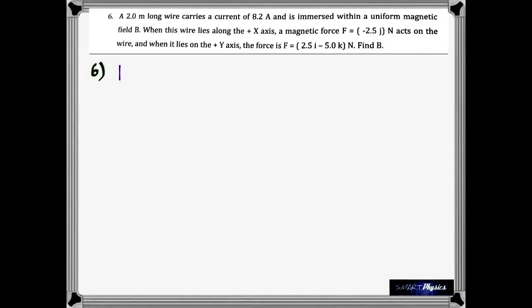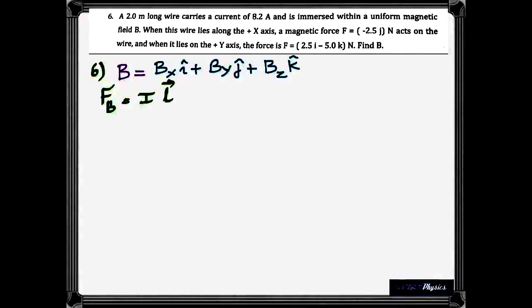Number 6. The 2 meter long wire carries a current of 8.2 ampere. And is kept in a uniform magnetic field. When the conductor lies along the positive X axis, the magnetic force is negative 2.5 J. But when it lies on the positive Y axis, the force is 2.5 I minus 5 K. Now there are two particular cases here. So you've got to make two conditions. Two mathematical equations. And then look at them.